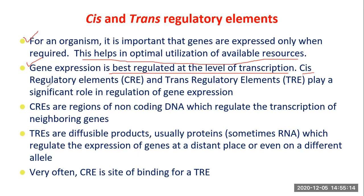Cis regulatory elements, abbreviated as CRE, and trans regulatory elements, abbreviated as TRE, play a significant role in the regulation of gene expression. They help the organism regulate gene expression as per requirement.